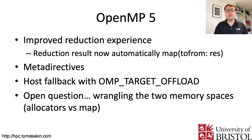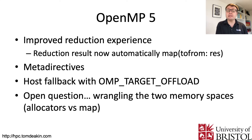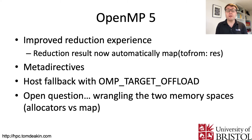OpenMP 5 also introduces meta directives — a preprocessor-like step for selecting which batches of compiler directives apply to different loops, providing a standard way to ifdef different directive fragments. Additionally, most GPU-targeting directives will automatically fall back to the host if a device isn't available. To ensure a kernel is actually offloaded, OpenMP 5 introduces the environment variable OMP_TARGET_OFFLOAD, which when set to mandatory forces target regions to offload and prevents host fallback.